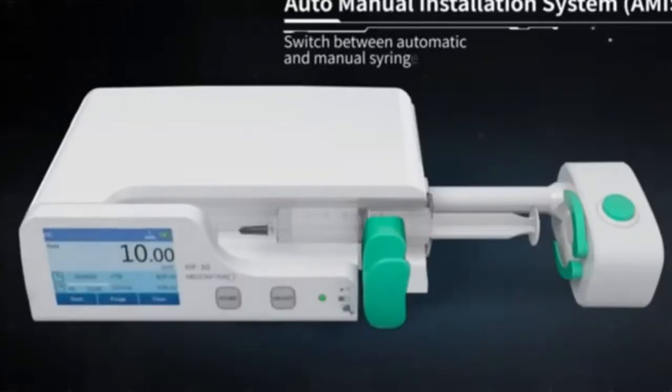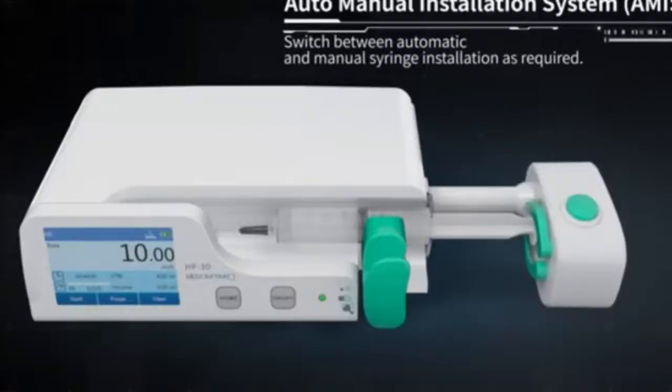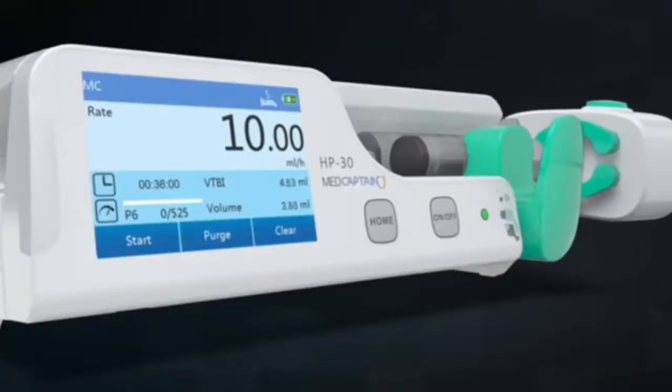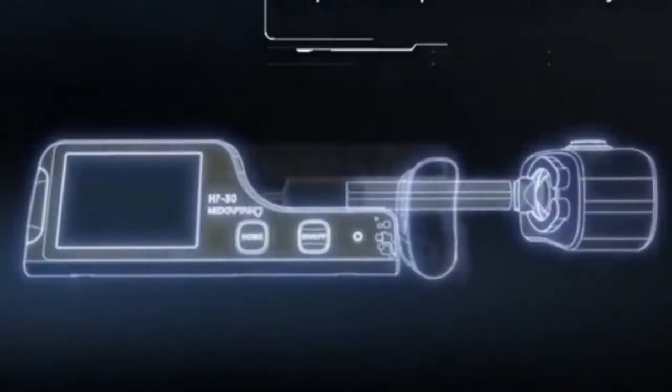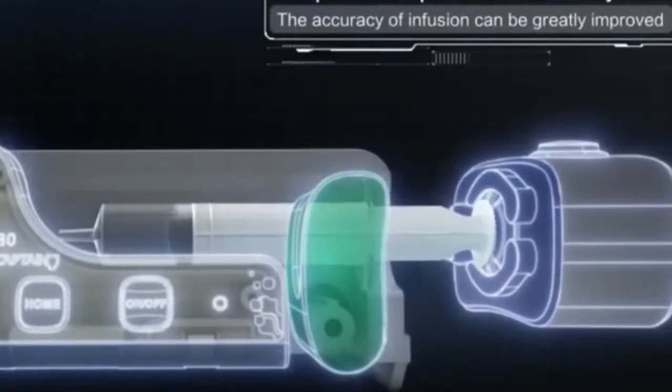Syringe pumps feature stepper motors that accurately move the platform attached to the plunger of a syringe. The body of the syringe is held steady to the body of the unit so that the only movement is from the action of the motor.